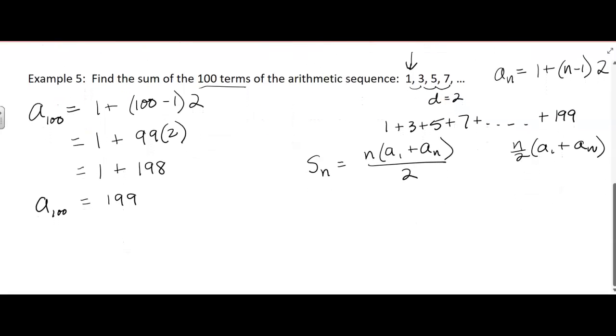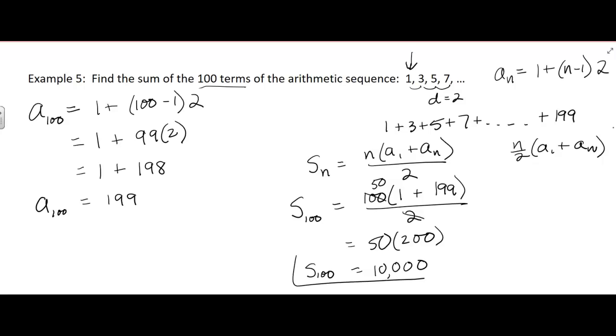So we're going to add up the first 100 terms in this sequence. S sub 100 equals 100 times (1 plus 199) divided by 2. So I get 50 times 200, which equals 10,000. So if you took the first 100 odd numbers starting at 1 and added them all up, you'd get 10,000. That's a pretty big number.